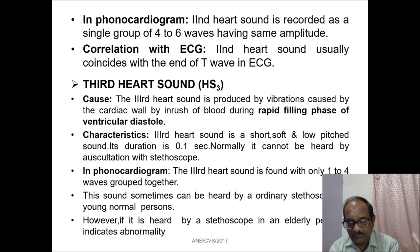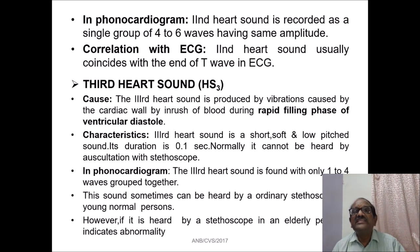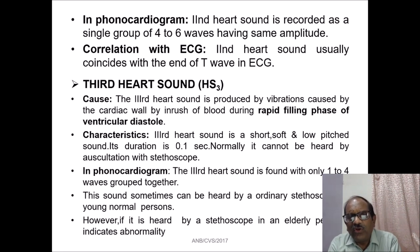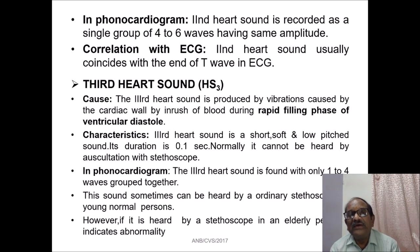In the phonocardiogram, the second heart sound is recorded as a single group of four to six waves of similar amplitude. Its correlation with ECG: the second heart sound usually coincides with the end of the T wave in the ECG. Then it is followed by the third heart sound, HS3. To remember the cause of the second heart sound — it occurs due to closure of the semilunar valves in the aorta and pulmonary artery.